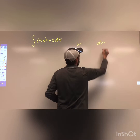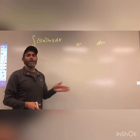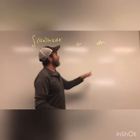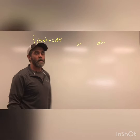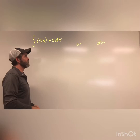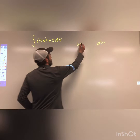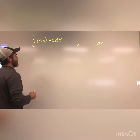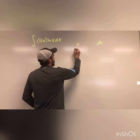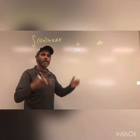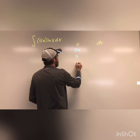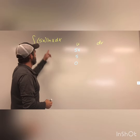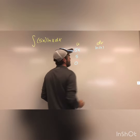Up until this point we've been establishing u and v. Just FYI, if you go on YouTube, a lot of people call this the DI method, not the tabular method — because this is the derivative column and this is the integral column: DI. So you can also search the DI method for more examples. Now, it might make sense to call the algebraic expression 5x as u, since it zeroes out. If we did that, we'd take its derivative and things would seem to be going well.